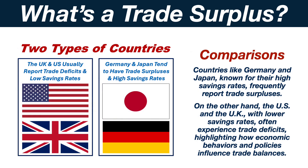Countries like Germany and Japan, known for their high savings rates, frequently report trade surpluses. On the other hand, the United States and the United Kingdom, with lower saving rates, often experience trade deficits, highlighting how economic behaviours and policies influence trade balances.